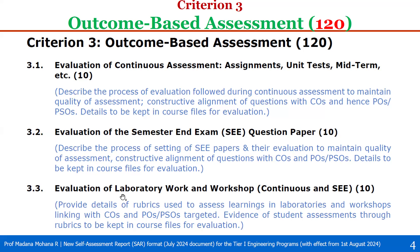Then 3.3, evaluation of laboratory work and workshops, with respect to continuous and SEE evaluation, which carries 10 points. Here we have to provide details of rubrics used to assess learnings in laboratories and workshops, linking with COs, POs, or PSOs targeted. We have to provide evidence of student assessments through rubrics, to be kept in the course file for evaluation.